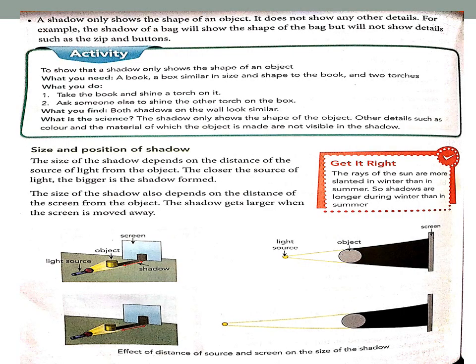Next characteristic: the shadow only shows the shape of an object. It does not show any other details. If you have a rectangular box, you will get a rectangular shadow. If you place a round object, you will get a round shadow. So details are not visible — only the shape. For example, the shadow of your bag will show the shape of the bag, but it will not show details such as the zip and buttons.